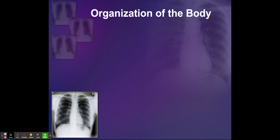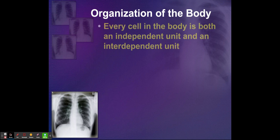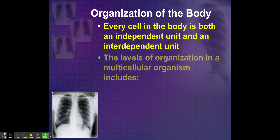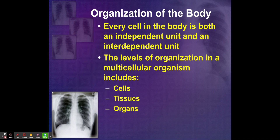How is the body organized? First, we have cells. Every cell in the body is both an independent unit and an interdependent unit. The levels of organization in a multicellular organism include cells to tissues — so cells make up tissues — tissues make up organs, and organs make up organ systems.